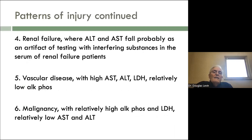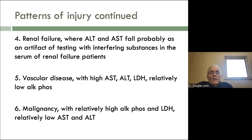In renal failure, the ALT and AST will tend to fall. You sometimes see this in progressive renal disease and think your liver disease is getting better. It's only because of interfering substances which are normally cleared from the serum by the kidneys but are not in this case, so they appear to drop even though that shouldn't be the case. With vascular disease, you'll have a high AST, ALT, and LDH with a relatively low alkaline phosphatase. With malignancy, you'll often have a relatively high alkaline phosphatase and LDH with a relatively low AST and ALT, as in metastatic disease to the liver. These patterns can give you some hint as to what the problem is, though they're not 100%.